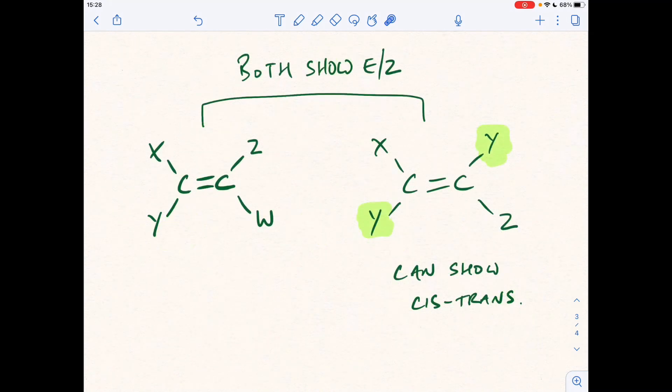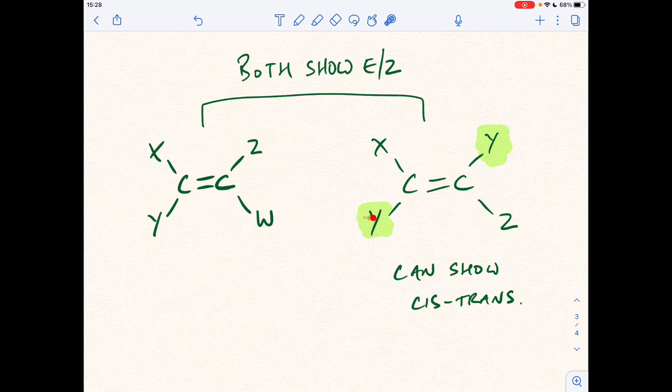So just to finish off, both of these molecules can show E/Z because that's different to that, and that's different to that. But only this one can show cis-trans because on each carbon of the C=C double bond, you've got an identical atom or group.